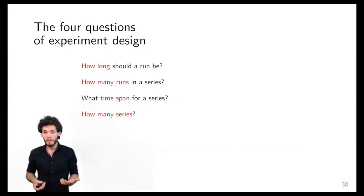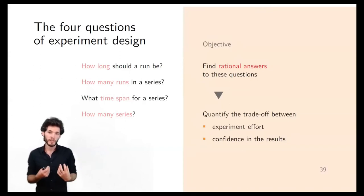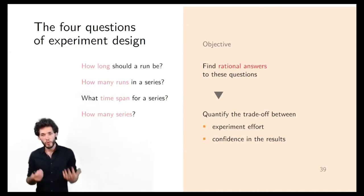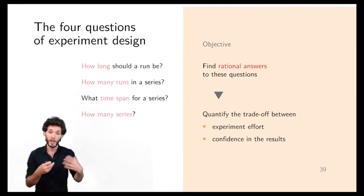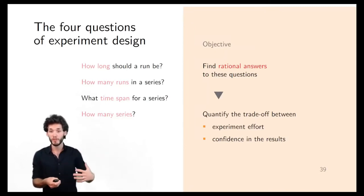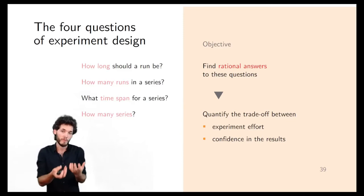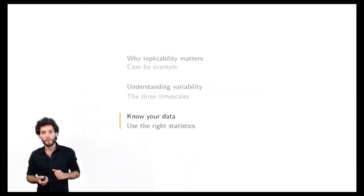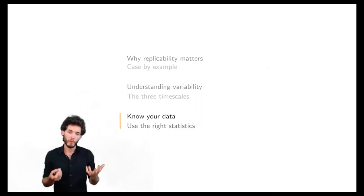Finally, the pendant of the second question: how many series do we want to do, if we want to talk about replicability? Also not clear. Today I'll give you ways — using TriScale — to answer those questions with rational, statistically sound answers. It's not about giving you a magic number like '42.' We want to quantify the trade-off: what do I gain by doing 200 tests instead of 100, with respect to the confidence I have in the final result?